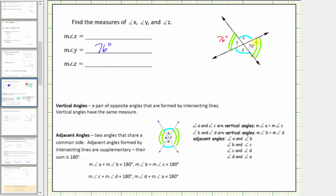Notice that angle X and the given angle that measures 76 degrees are adjacent angles and are also supplementary, which means the measure of angle X plus 76 degrees must equal 180 degrees. Therefore, the measure of angle X must equal 180 degrees minus 76 degrees.